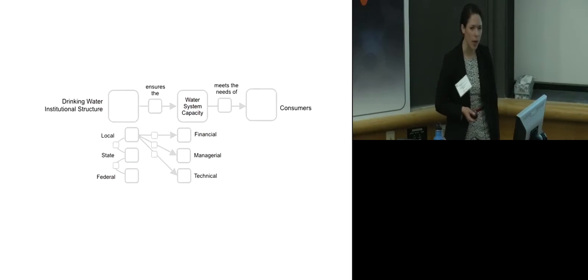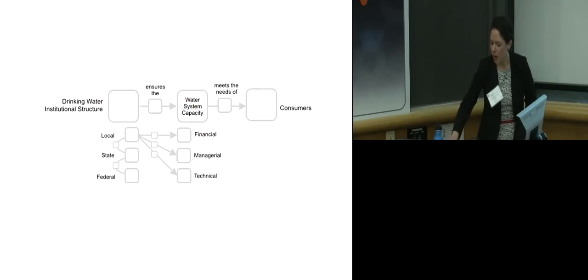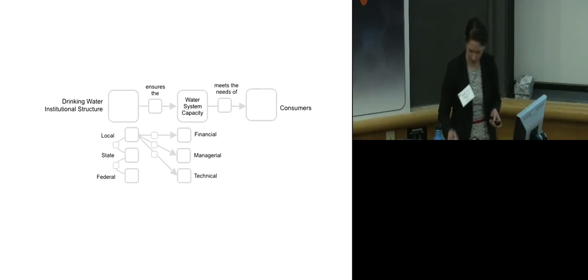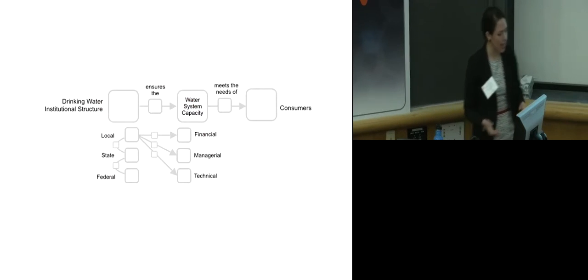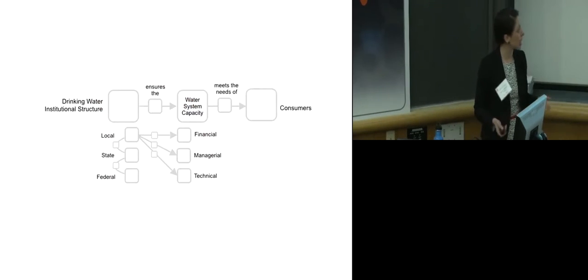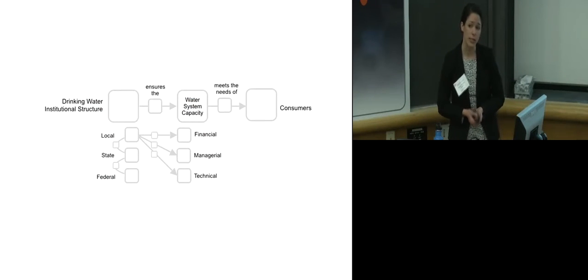Now, to understand this complex problem, I want to take a step back and look at how things happen when everything's going well. Like in Ithaca, how do we get the safe drinking water? So, Ithaca, like Flint, lies in a drinking water institutional structure. It's made of both federal, state, and local officials, and they work together to ensure the water system capacity meets the needs of consumers.